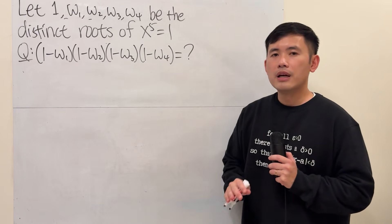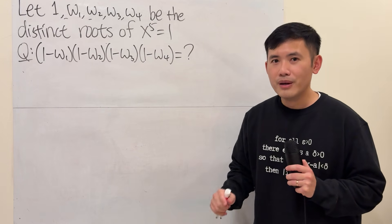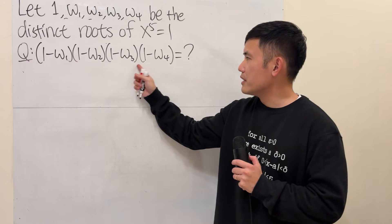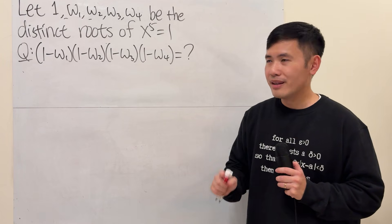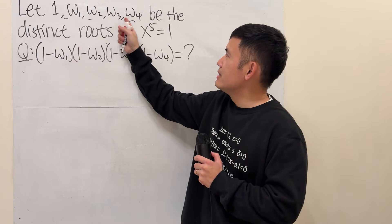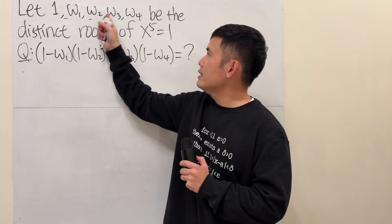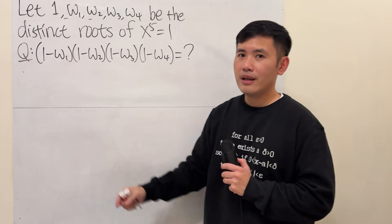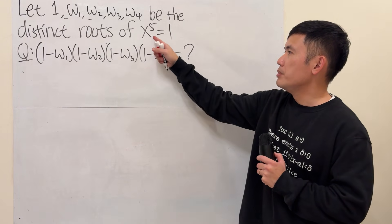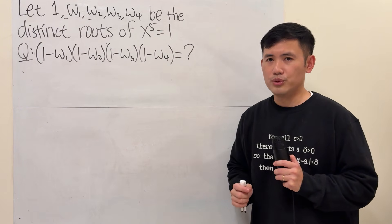First thing: the answer is not equal to 0, because the omegas here are not equal to 1. We have 1, omega 1, omega 2, omega 3, and omega 4 — they are all distinct, meaning different. So the omegas are not 1. In fact, 1 is a root of this equation because 1 to the 5th power equals 1, and that's the only real solution.